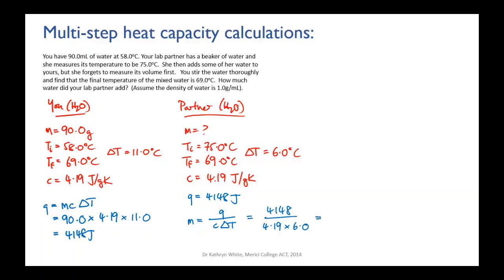So plug that in and the mass that you get out is 165 grams. Let's check the sig figs situation. We've got three here and three here and three here. For your partner's water we've got two for her temperature once you've done the subtraction, and three here. So two is going to be our final number of sig figs, so we have to round our 165 up to 170 grams. So she added 170 grams of water at 75 degrees Celsius to your 90 grams of water at 58 degrees Celsius, and the consequence was that you ended up with 260 grams of water all at 69 degrees Celsius.